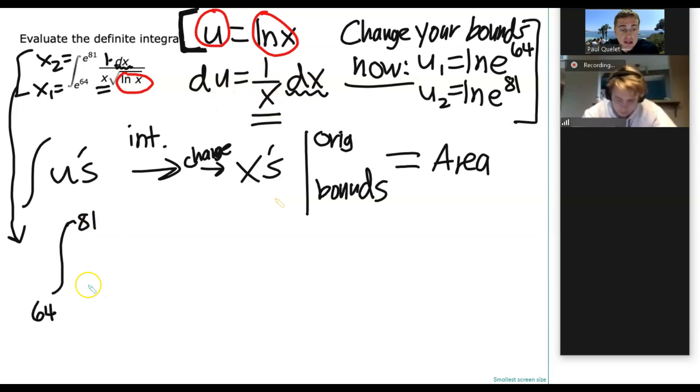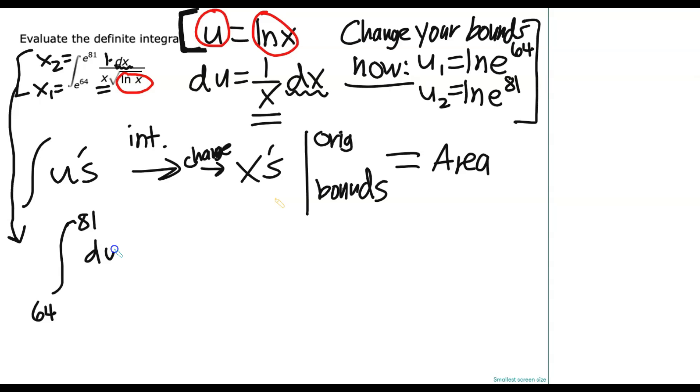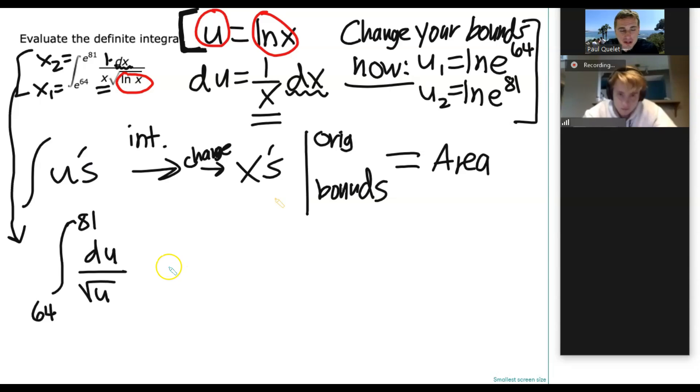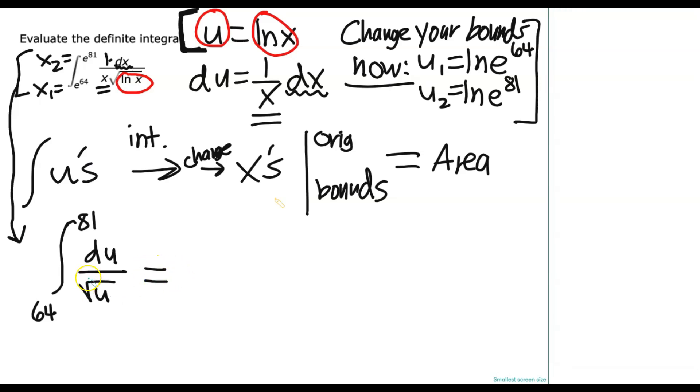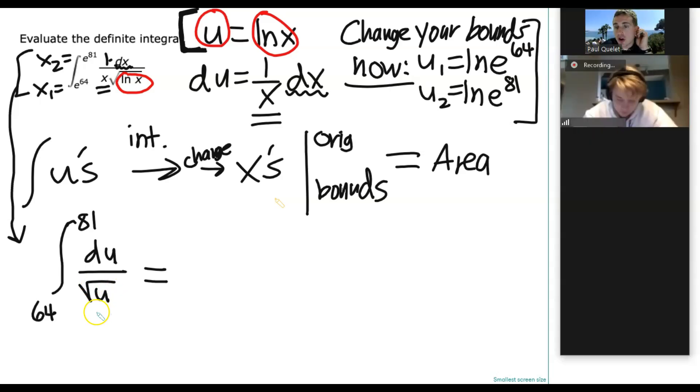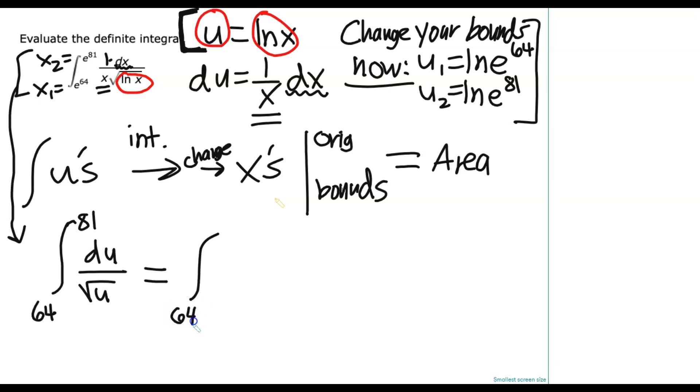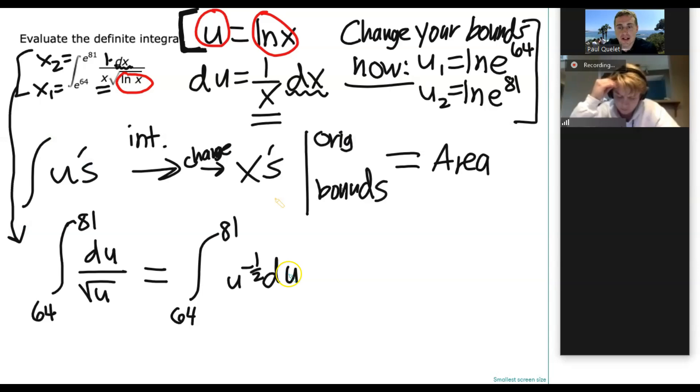We've got 64 to 81 are the new bounds. 1 over x dx became du. So that's du right here. And then square root of ln(x), well ln(x) is u. So that's the square root of u. Now that really doesn't look that bad, especially for a definite integral. So first of all, u to the square root of u is what power again? 1 half. And it's also on the bottom. So what do we probably want to do? Negative 1 half.